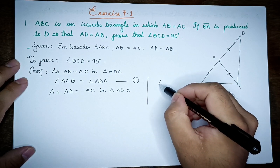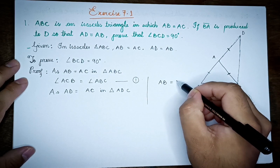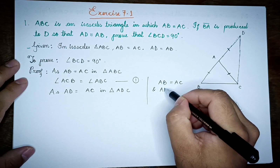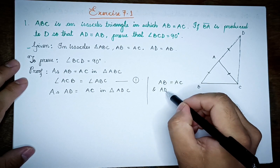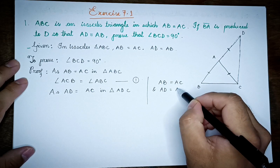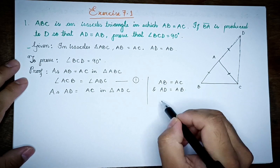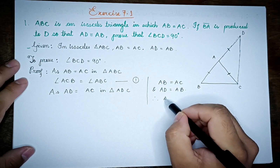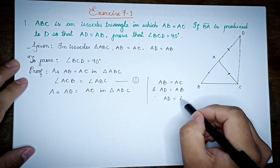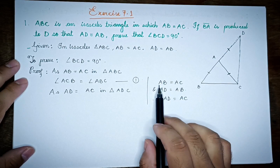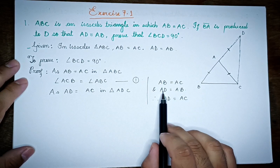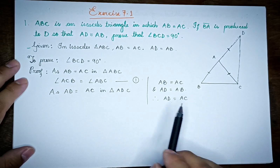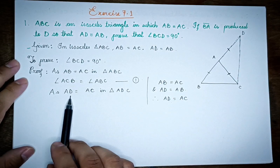AB and AC is the same as AD, so AB or AC equals AD or AC. This means AD equals AC. So AD is equal to AC, and D is equal to C.